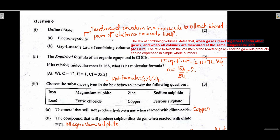The empirical formula of an organic compound is CHCl2 and its relative molecular mass is 168. Find the molecular formula: empirical formula weight of CHCl2 is 84. n = molecular weight ÷ empirical formula weight = 168 ÷ 84 = 2. So 2 × empirical formula gives the molecular formula: C2H2Cl4.